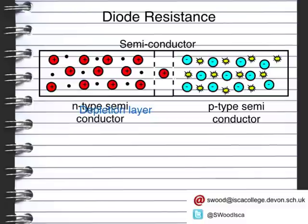The depletion layer is named as such because if electrons move into it they are repelled by the negative ions, and if holes were to move into the depletion layer they would be repelled by the positive ions on the N-type side. So electrons are repelled by the negative ions, and holes are repelled by the positive ions.